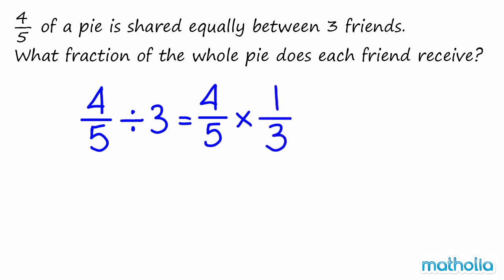4 fifths divide 3 is equal to 4 fifths times 1 third, which is equal to 4 fifteenths. So each friend receives 4 fifteenths of a whole pie.